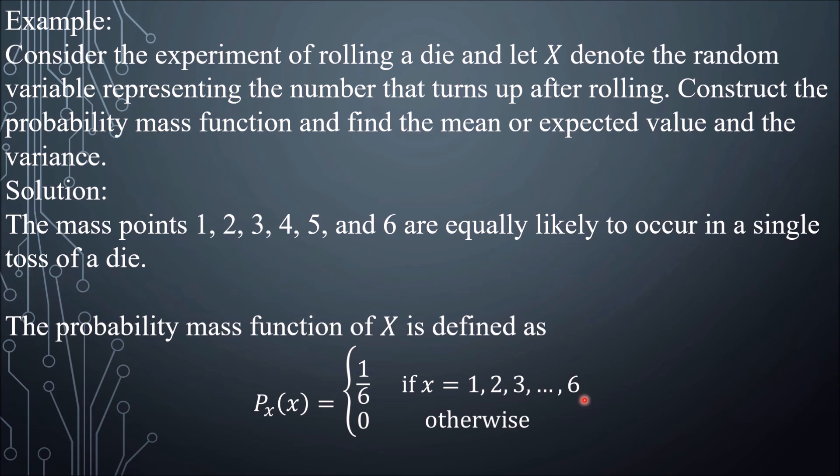The probability is uniform. Probability of 1 is 1/6, probability of 2 is 1/6, and so on up to 6. They have the same probabilities, which we call a discrete uniform distribution.